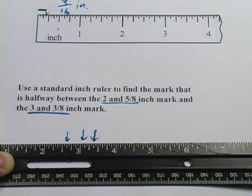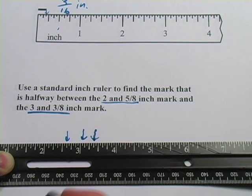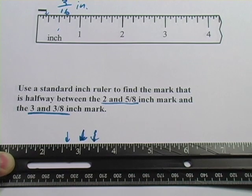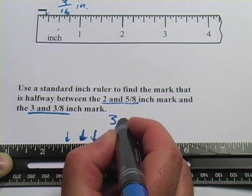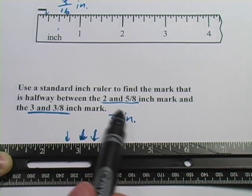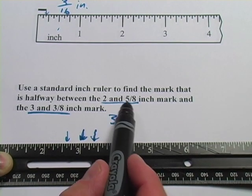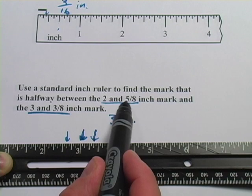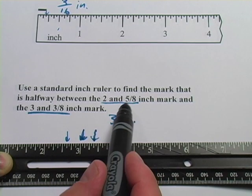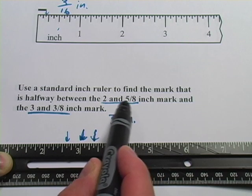And that does look pretty much halfway between, although I drew it a little bit over. It should be more like that. So the point, then, that's exactly halfway between is the 3-inch mark. And if you just look at the numbers, that'll make sense. If I were to get up to 3 inches here, that would be 2 and 8/8, which would be 1. 2 and 1 is 3. To get there, I'd have to add 3/8 of an inch.